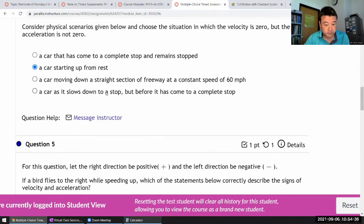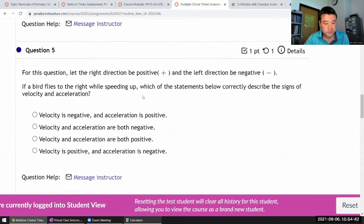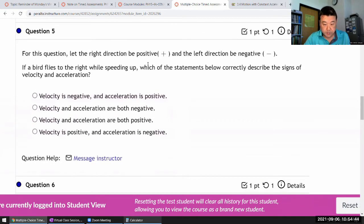Here it slows down to, yeah. In these cases, velocity is not zero. So let right direction be positive, left direction be negative. Okay. Flies to the right while speeding up. So speeding up means velocity and acceleration are in the same direction. Flying to the right means a positive velocity, the way we are defining them. So acceleration is the same direction as velocity, which means positive. So velocity and acceleration are both positive.